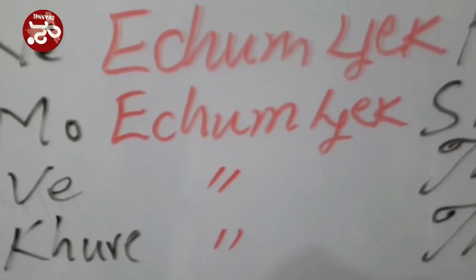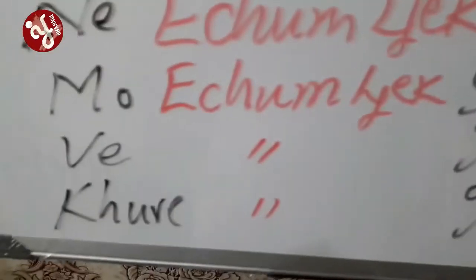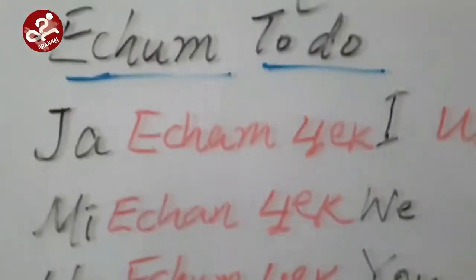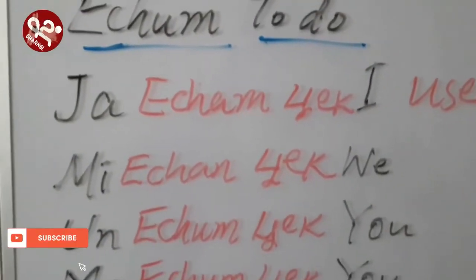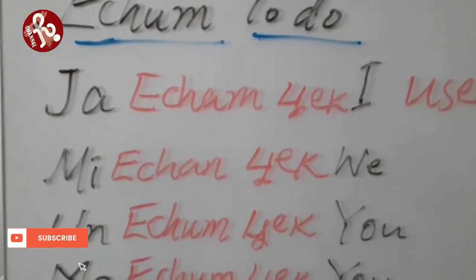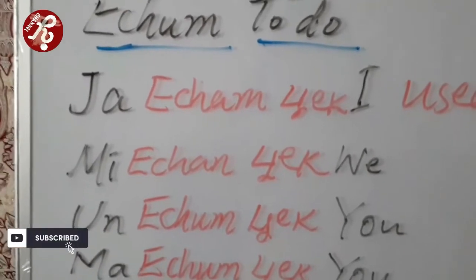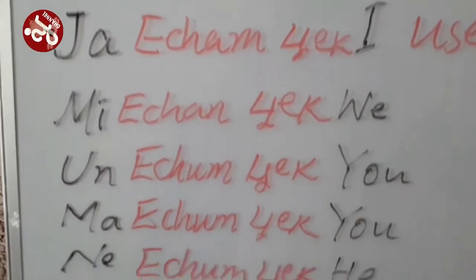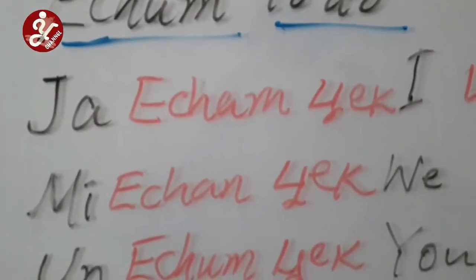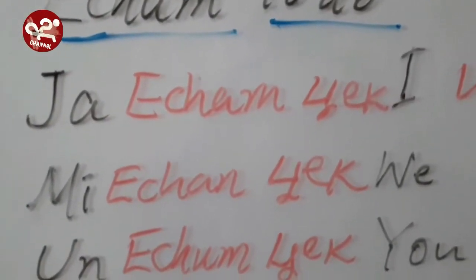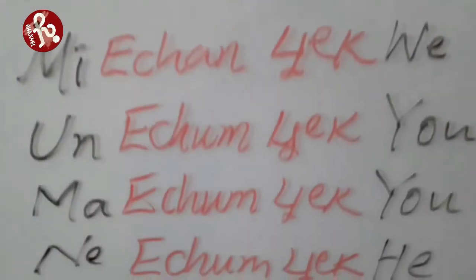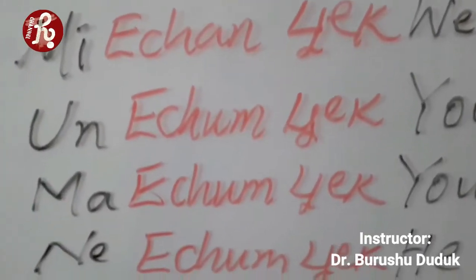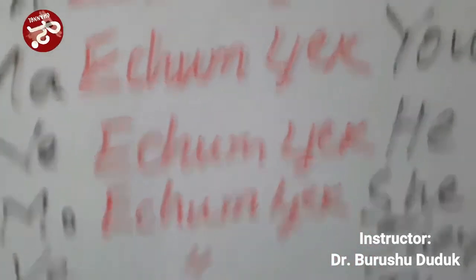'Whey acham check' means 'they used to do.' So the full pattern is: ja acham check, me acham check, un acham check — and after that, everything is 'acham check.' Only 'ja acham check' and 'me acham check' differ; after those, all pronouns use 'acham check.'